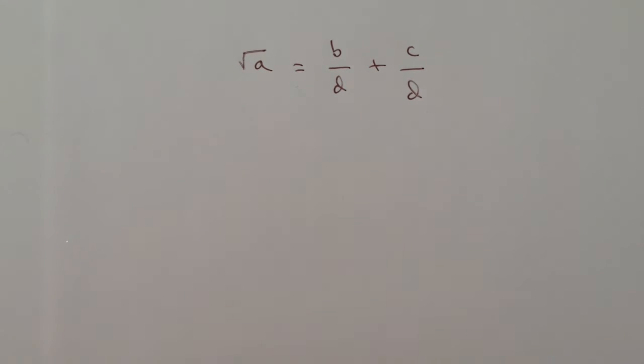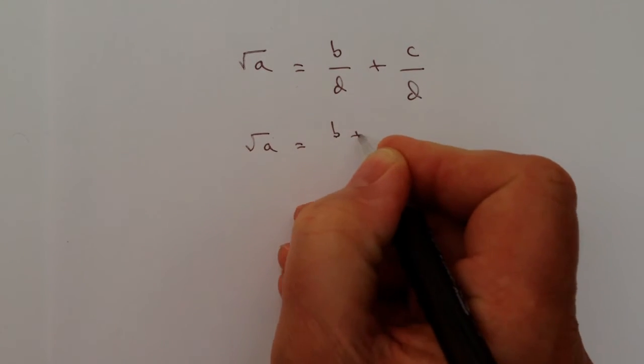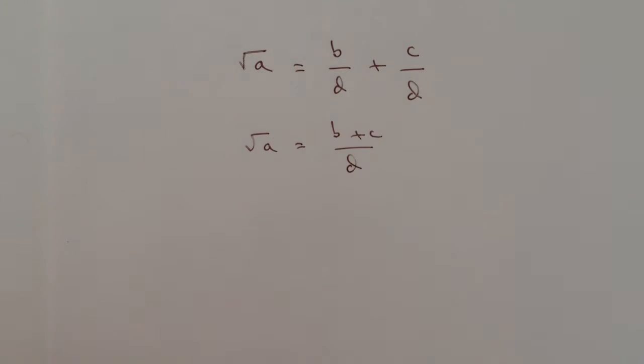The first thing I'm going to do is rewrite that slightly to root A equals B plus C over D. It's exactly the same. It just makes it easier now because I'm going to get rid of this D as a denominator.